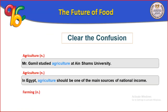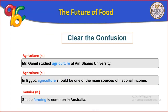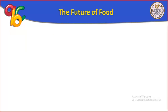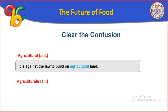Farming includes the science of agriculture, land farming, and animal keeping. Example: Sheep farming is common in Australia. Agricultural is an adjective meaning زراعي (agricultural). Example: It is against the law to build on agricultural land.